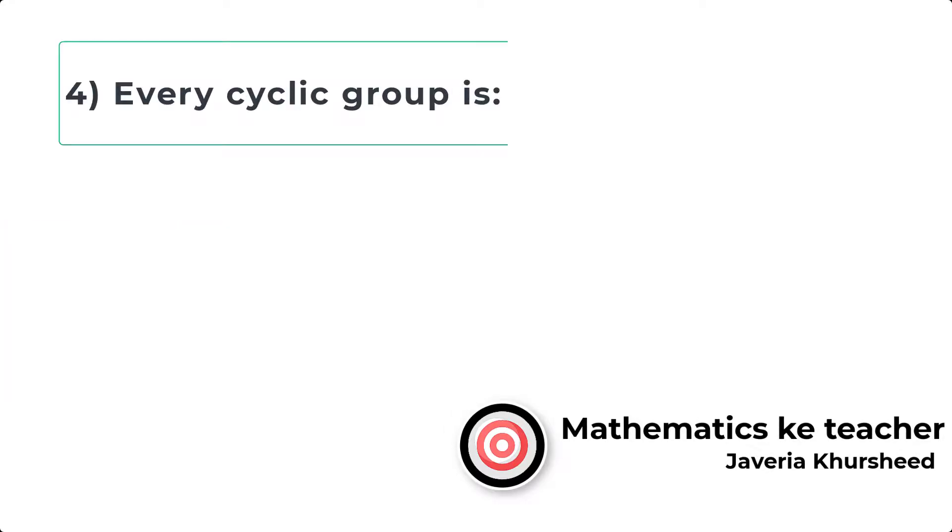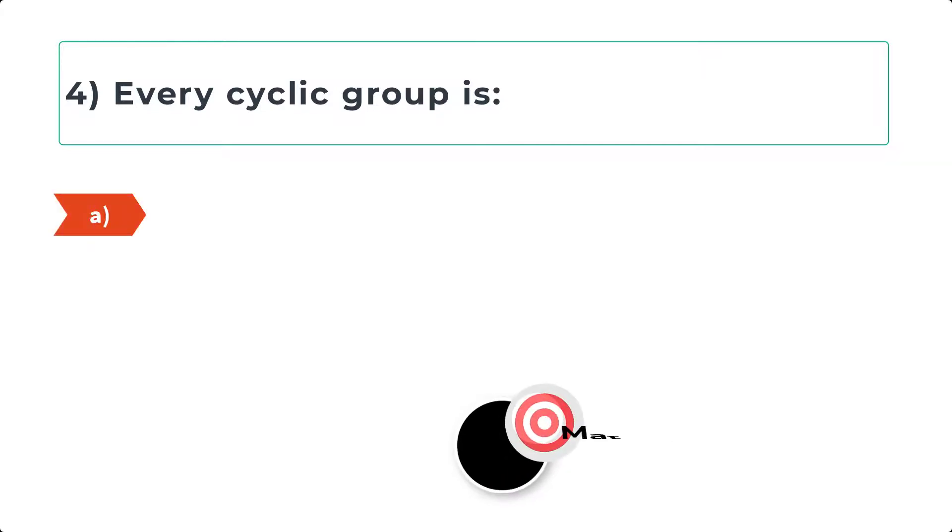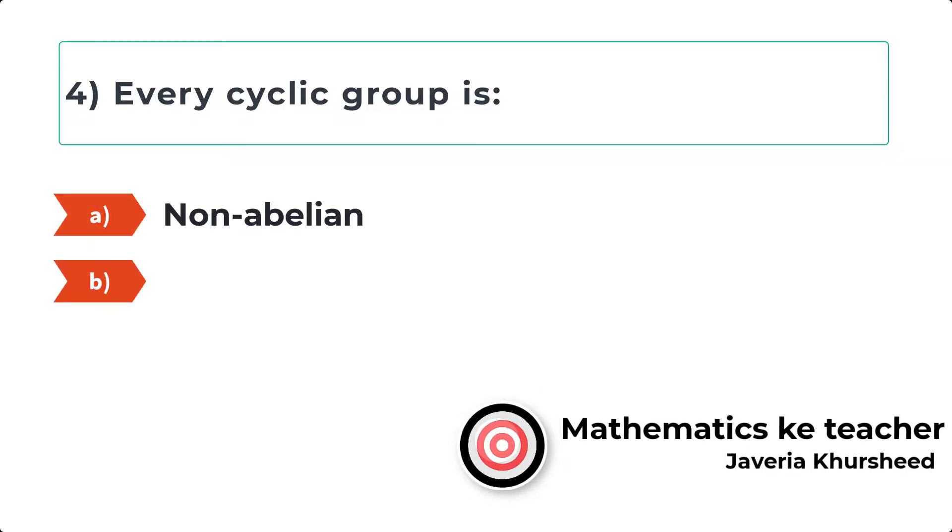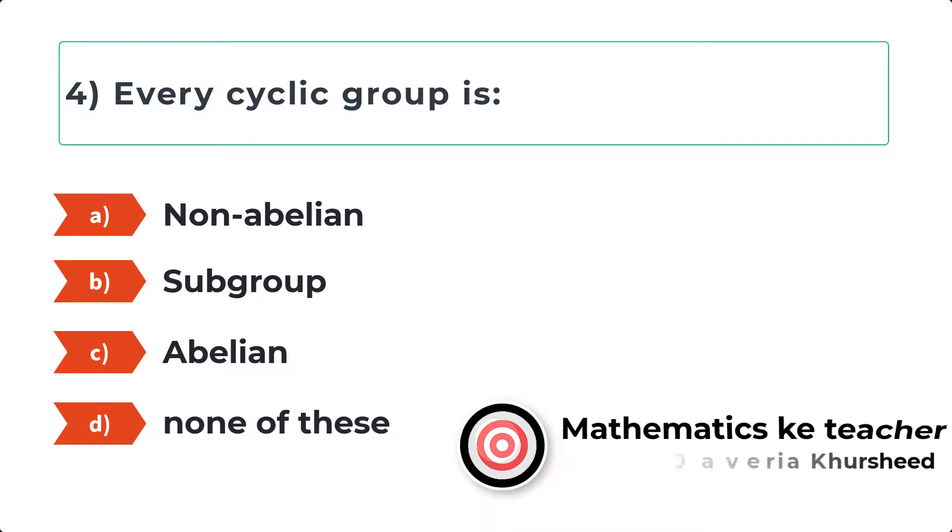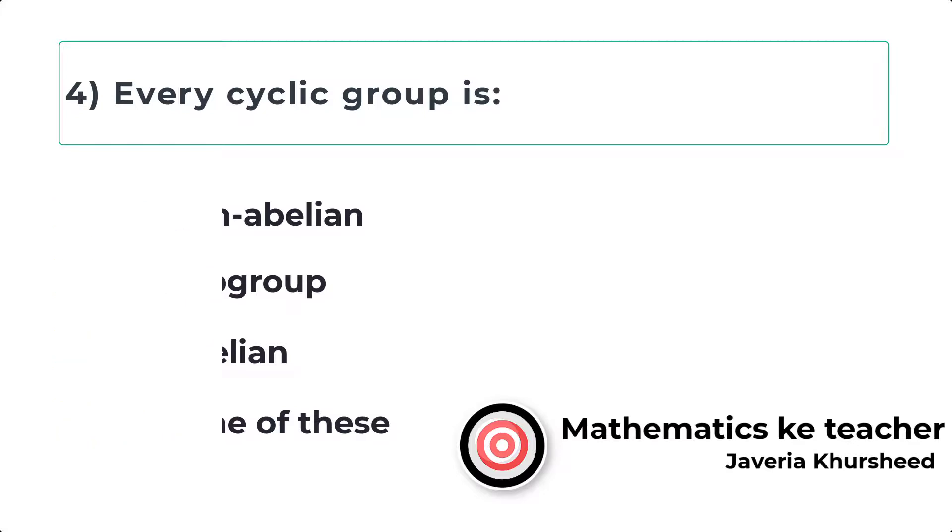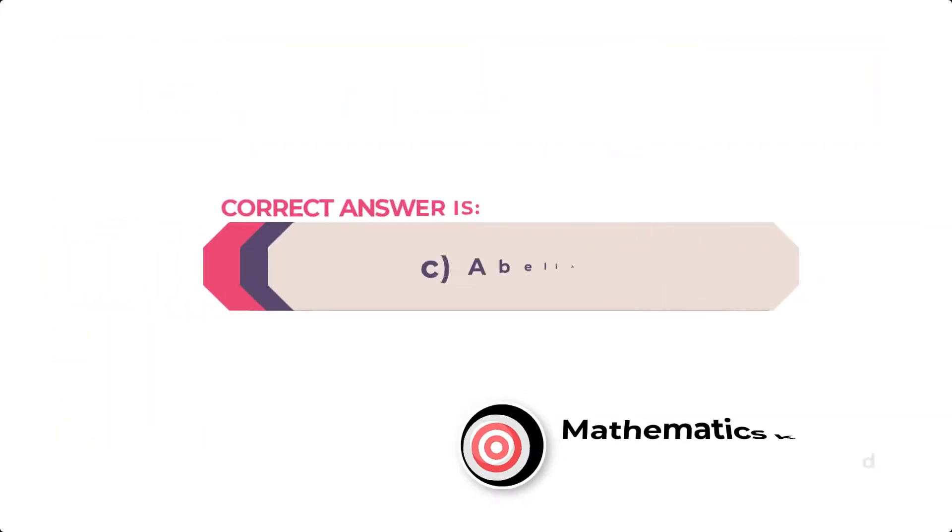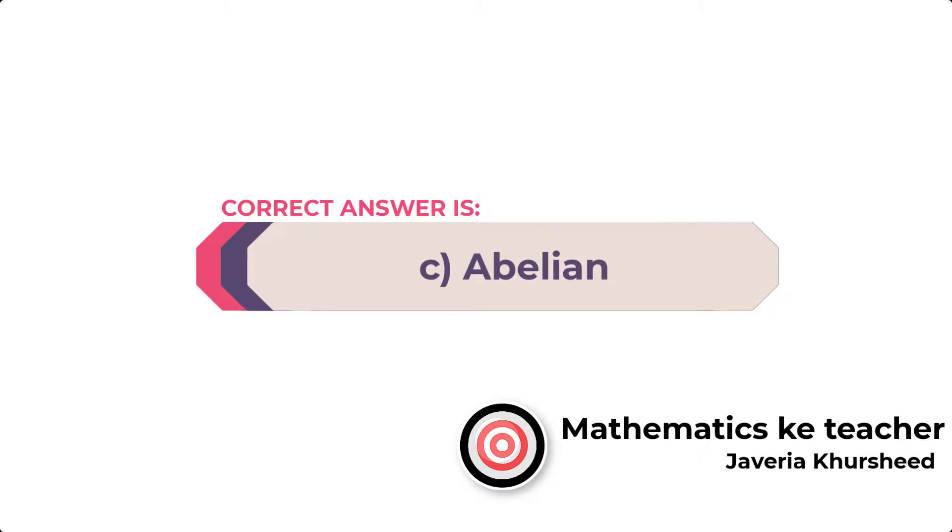Question 4: Every cyclic group is: A, Non-Abelian; B, Subgroup; C, Abelian; D, None of these. Correct answer is C, Abelian.